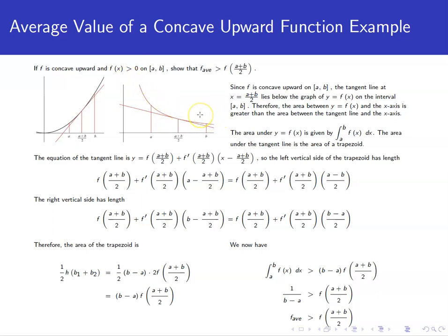In either case, since the function is concave upward, your tangent line at the point x equal to (a+b)/2 must be below the curve. If it's concave up, that means your tangent line comes in and touches and leaves and is below the curve on that entire interval.